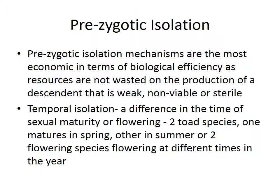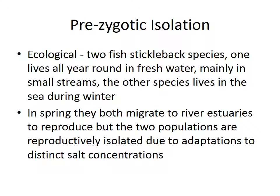There are many mechanisms for prezygotic isolation. One is temporal — a difference in time of sexual maturity or flowering. For example, two toad species: one matures in spring, the other in summer, so they can't interbreed. Two flowering species may flower at different times during the year, preventing interbreeding. There could also be an ecological barrier — like two stickleback fish species, one living year-round in freshwater streams and the other living in the sea during winter. In spring both migrate to river estuaries, but they are reproductively isolated due to adaptations to distinct salt concentrations.